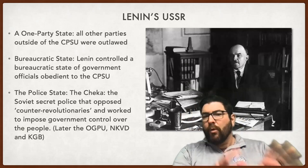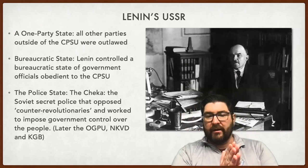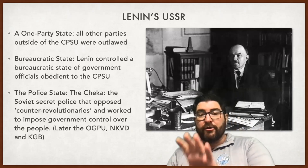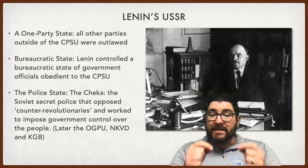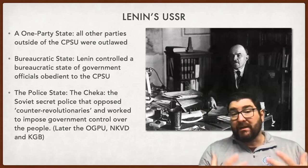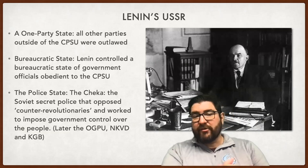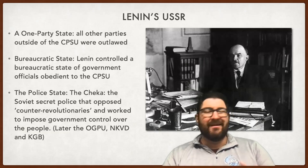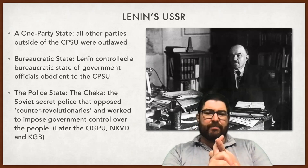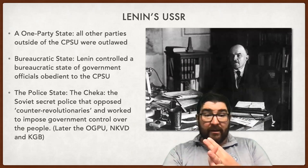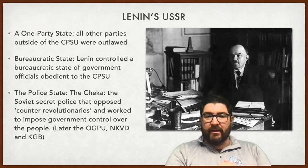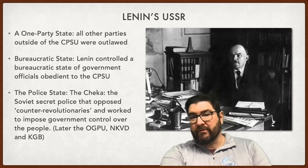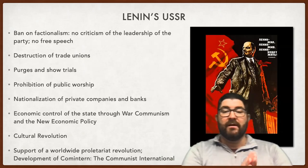Lenin's Soviet Union was a one-party state — all other parties were outlawed. It was a bureaucratic state; Lenin controlled all government levels, all obedient to the central party. It was also a police state. The earliest secret police was known as the Cheka, which later went under other names — the OGPU, the NKVD, and the KGB that you're more familiar with. They opposed any resistance from within, known as counter-revolutionaries, and worked to impose government control over all people.